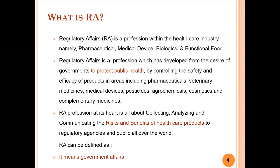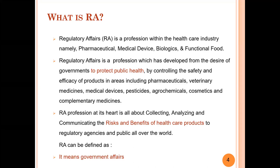ICH has written beautiful guidance documents under the subjects of quality, safety, efficacy, and multidisciplinary. Just remember that any health authority's main objective is to protect public health. To protect public health, we have to meet three parameters: quality, safety, and efficacy. Without these three parameters, we cannot move forward, we cannot register our product, we cannot get market approval from any country. Once we prove that our product is of good quality, it is safe for human use, and it is efficacious, then only we get the marketing approval. That is the role performed by the regulatory affairs professional.